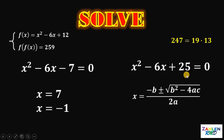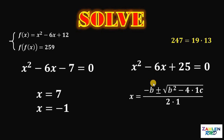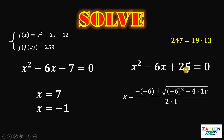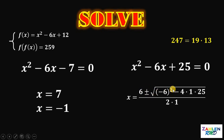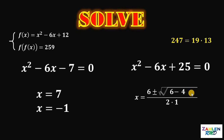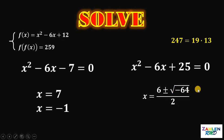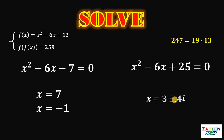On our quadratic equation, a is 1, so we can replace all a with 1. The b is negative 6, so we can replace all b with negative 6. And c is 25, so we can replace c with 25. Simplifying: negative of negative 6 gives us positive 6. Negative 6 squared minus 4 times 1 times 25 gives us negative 64. And 2 times 1 gives us 2. The square root of negative 64 gives us 8i, where i is an imaginary number equivalent to the square root of negative 1. So 6 plus or minus 8i divided by 2 gives us 3 plus or minus 4i.